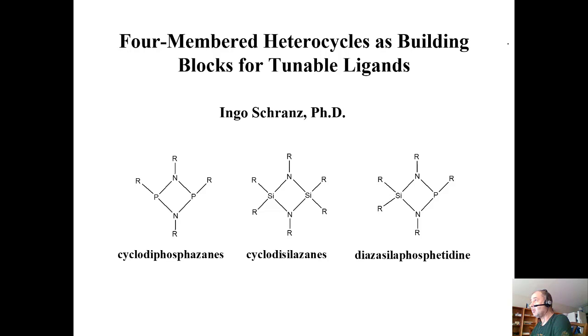I'm an inorganic chemist who's interested in ligand design for making active catalysts. In graduate school, I worked with three heterocycles: cyclodiphosphazanes, cyclodisalazanes, and diazacylophosphatidines. They were ideal because you can easily modify them. Each R group can be turned into whatever you want - other amines or phosphines - making nice ligands. And they're cheap too.